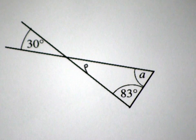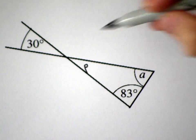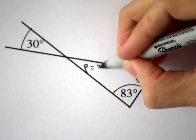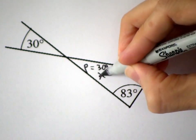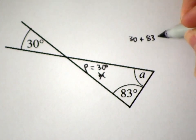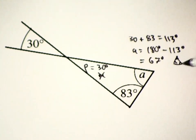Can I work out P? Of course, it's vertically opposite that 30 degrees, so P must also be 30 degrees. Now 30 plus 83 is 113, so A must be 67 degrees.